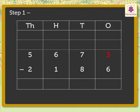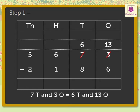As the ones are not enough, we regroup the tens. That is, 7 tens and 3 ones is equal to 6 tens and 13 ones. Therefore, 13 minus 6 is equal to 7 ones.